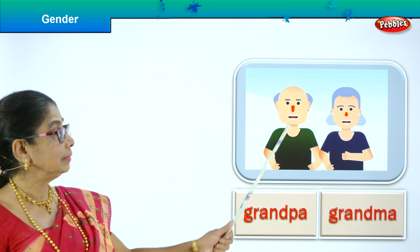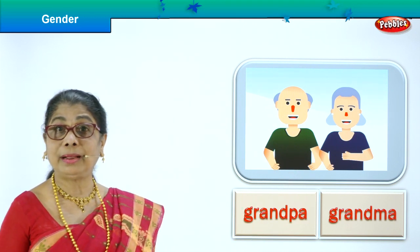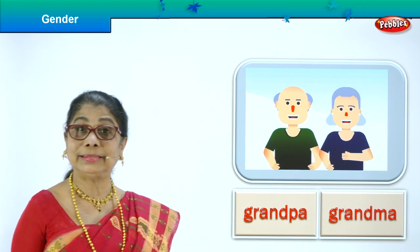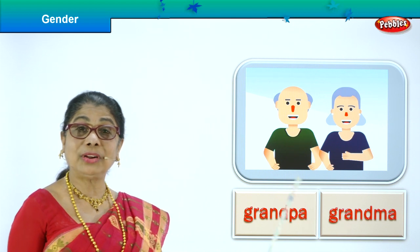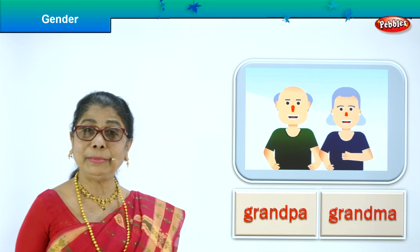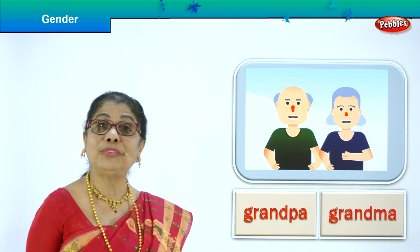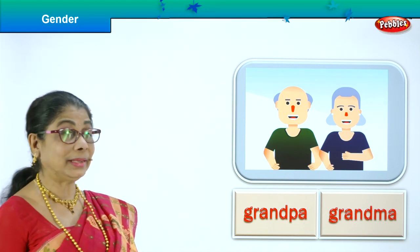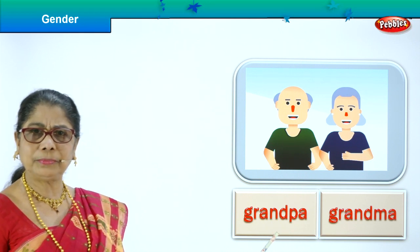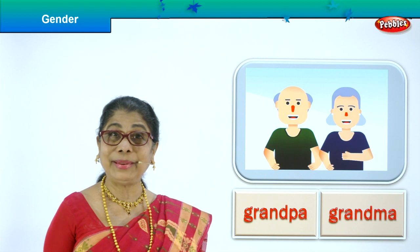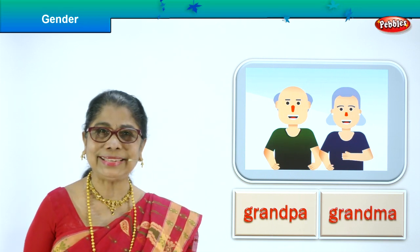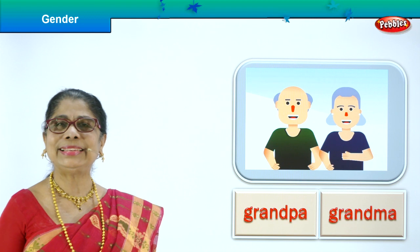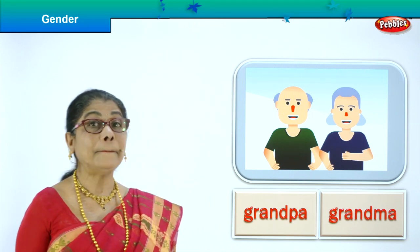Who is this? Grandpa and grandma. Grandfather, grandmother. Daddy's father is called grandfather, daddy's mother is grandmother. Mummy's father is grandfather, mummy's mother is grandmother. So you have two grandpas and two grandmas. Grandpa is masculine gender, grandmother is feminine. Lovely picture, isn't it? What do they tell you? Stories. They love you so much. Good, let's go on to another picture.